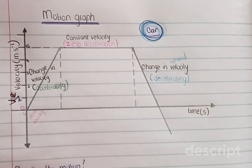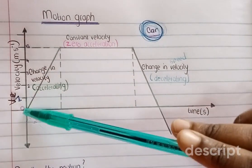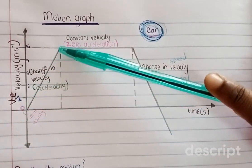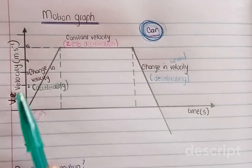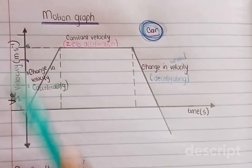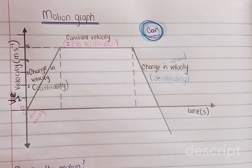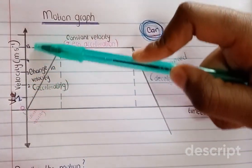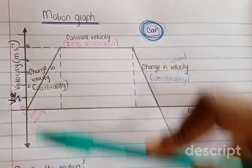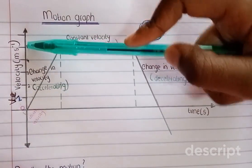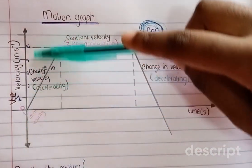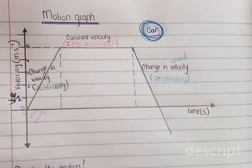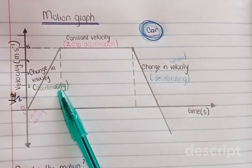Acceleration simply means an increase in speed. I like to look at it like this: we move from 0, 1, 2, 3, 4, 5 — the numbers are increasing. So as the numbers are increasing, that means the speed is increasing. That's why the velocity is changing and the car is accelerating.